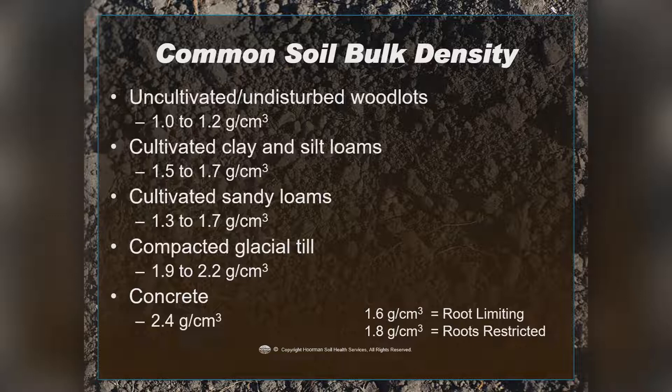When we look at an uncultivated undisturbed woodlot, the bulk density is somewhere around 1 to about 1.2. At the other end, something like concrete is around 2.4. As we get more compacted or have denser materials, the number goes up. The highest bulk density is about 2.65, and we can use that number to figure out how much pore space we have versus solid material.